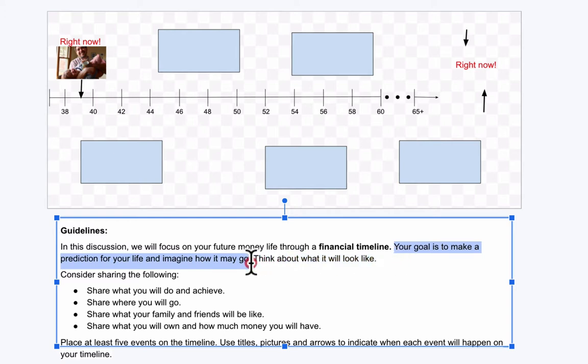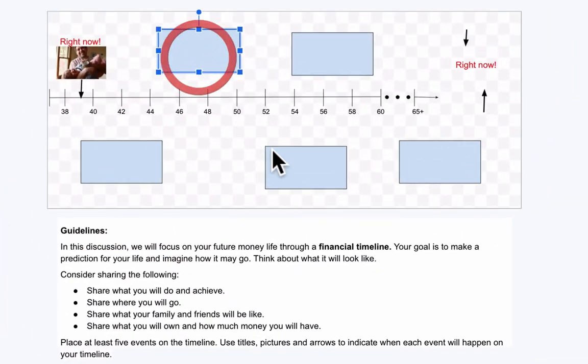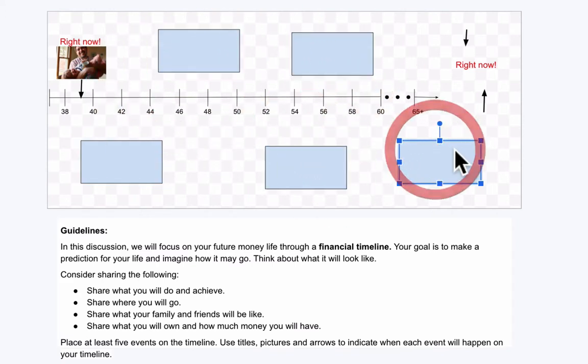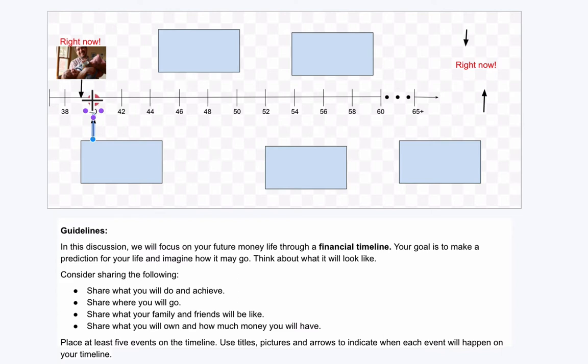So if you look at the guidelines down here, this says that your goal is to make a prediction for your life and imagine how it may go. These are things to consider: what you will do and achieve, where you will go, what your family and friends will be like, what you will own, and how much money you will have. You don't have to mention all those things. I'm just asking you to think about them and then fill in some events accordingly. So I'll do a couple with you. I'll make a prediction and then imagine where it will go. I'm going to start sooner in my life and then follow it along until later parts of my life. I'm going to copy and paste this arrow and I'm going to say, nice landmark, it's pretty close here.